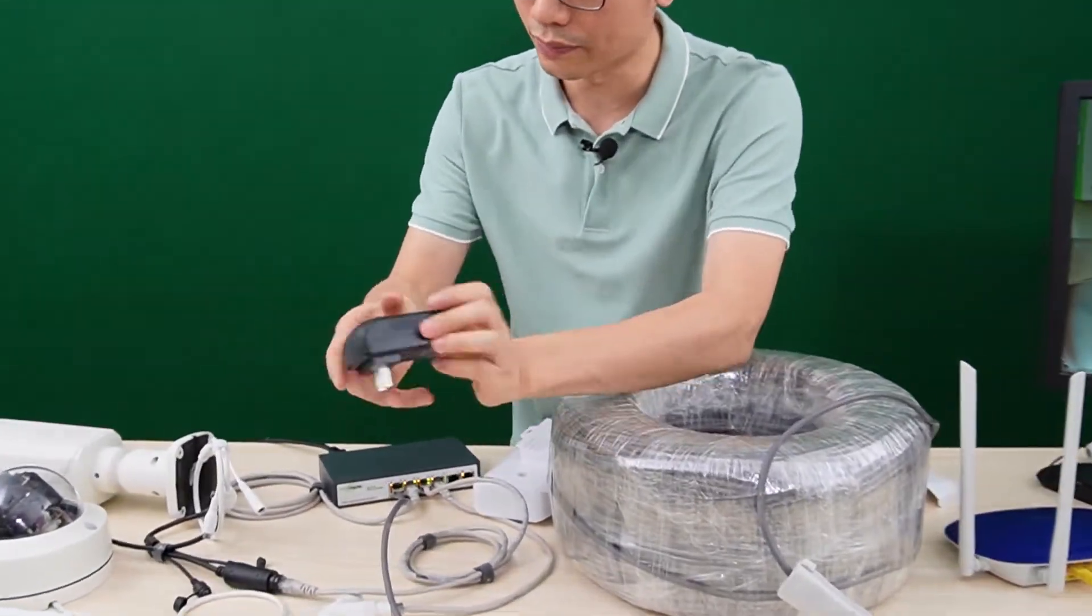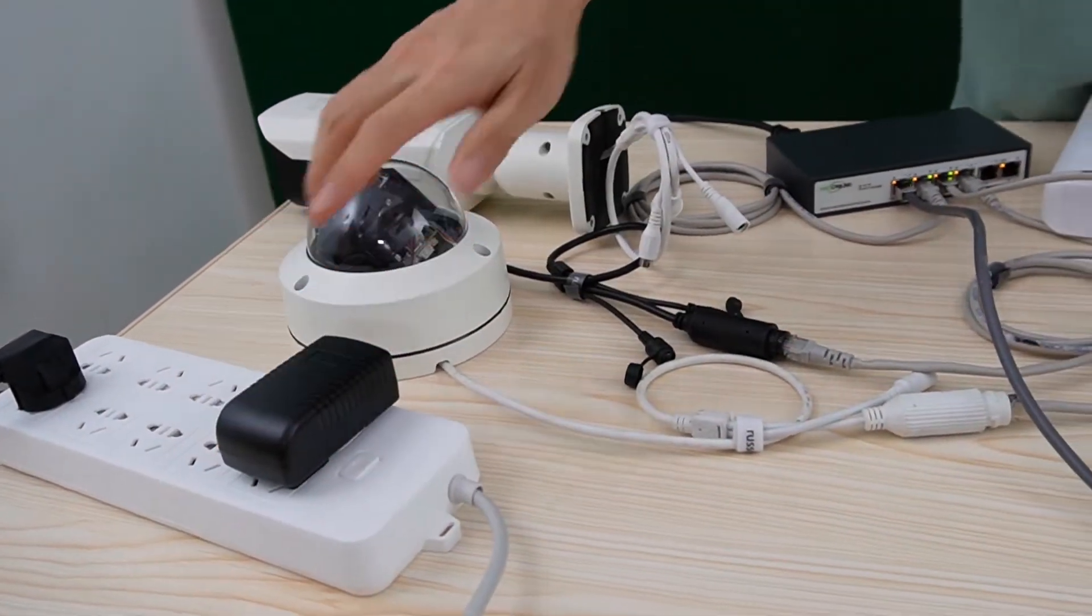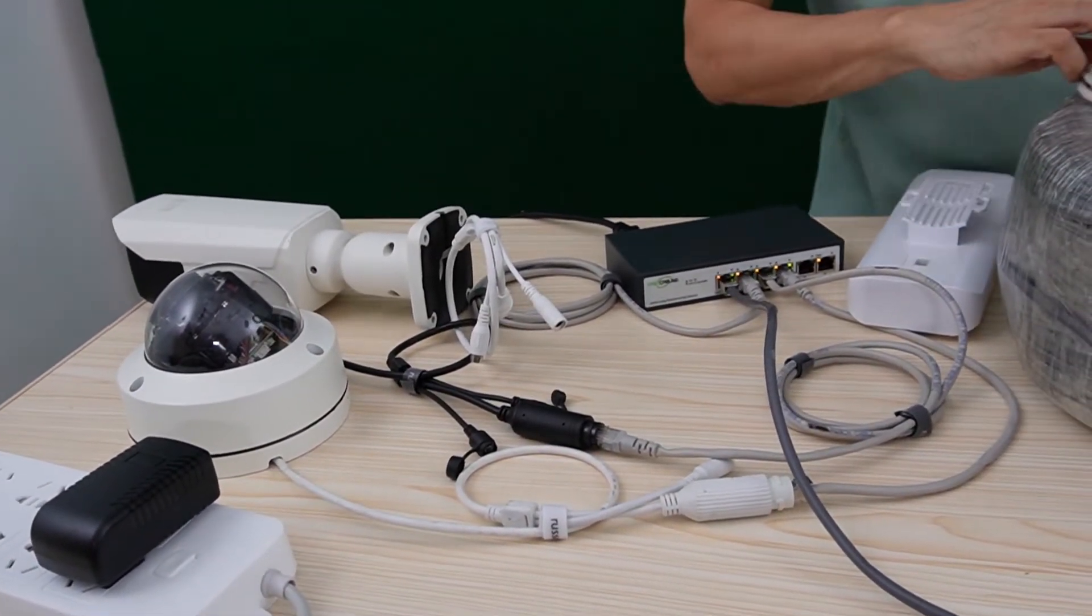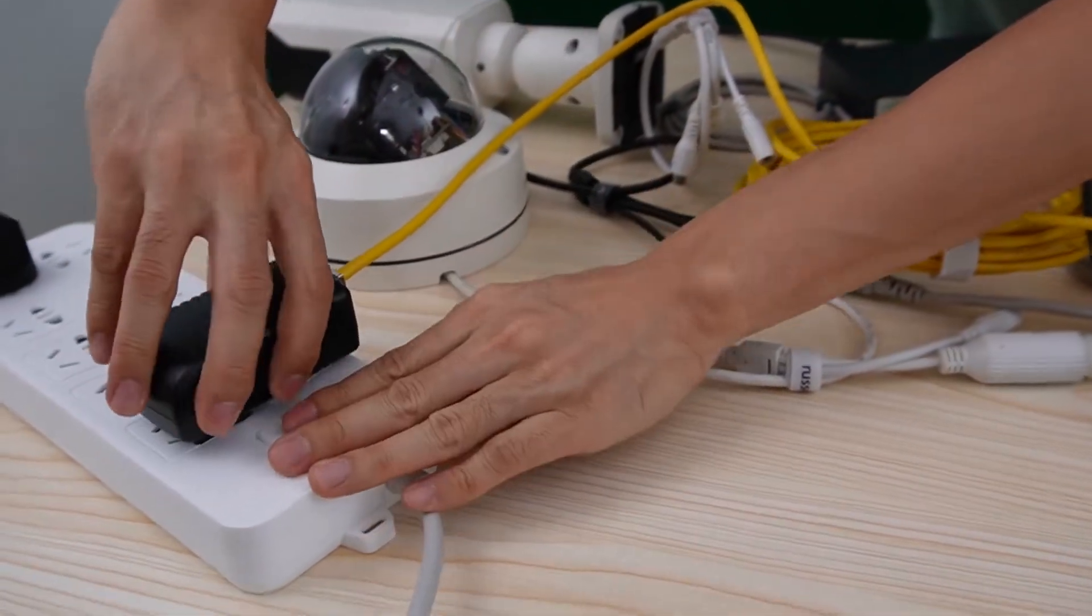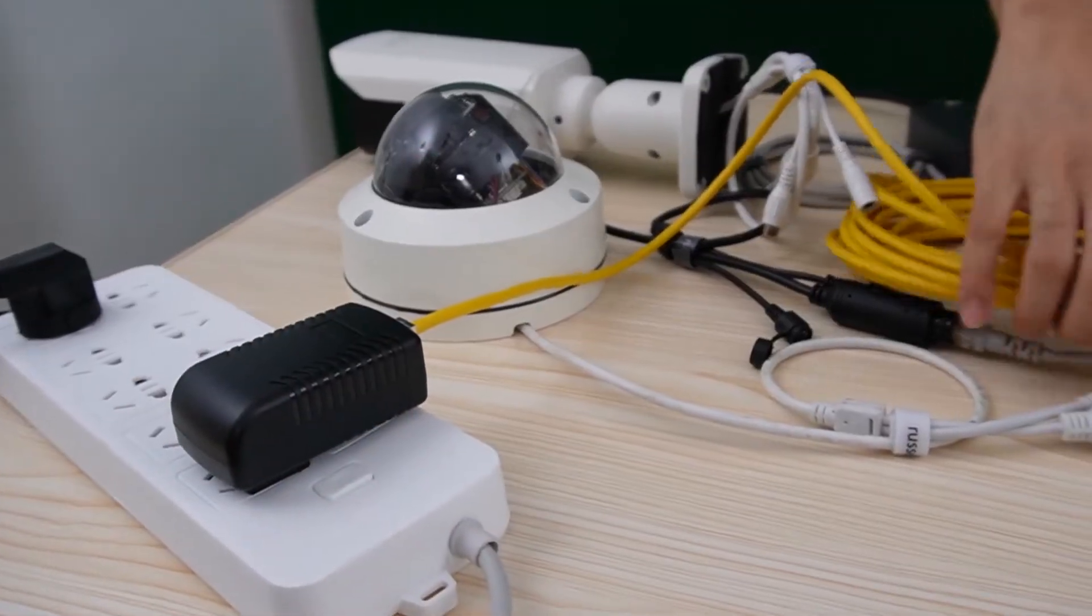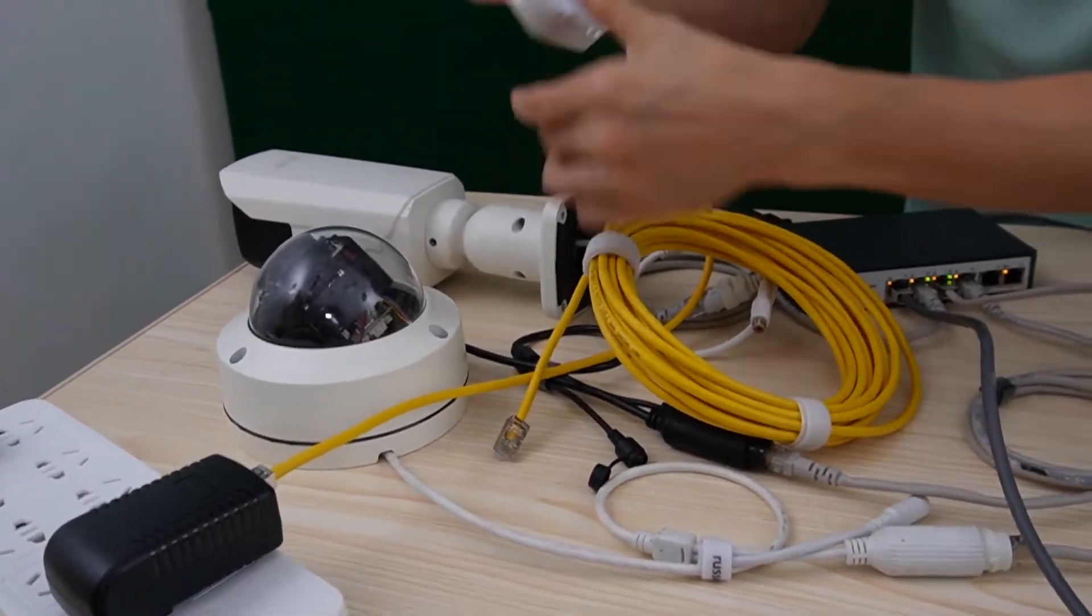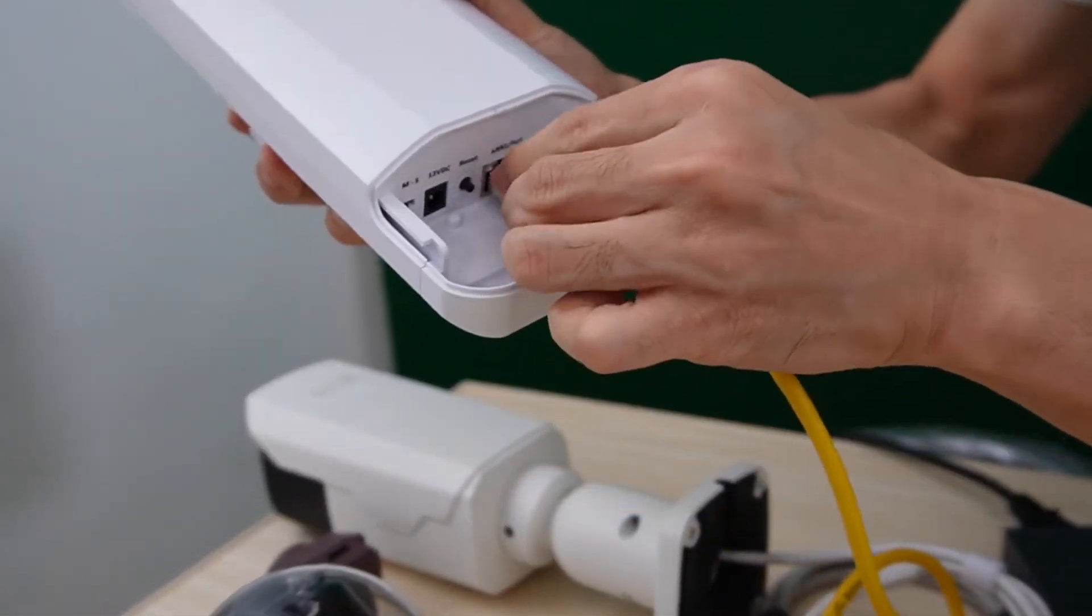This is the passive PoE injector. We connect the PoE injector to the AC outlet so we can get the power. Now we need two short patch cables. The first patch cable is connected to the PoE port. This is the PoE port, so it will supply the power to the wireless access point.